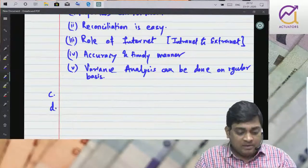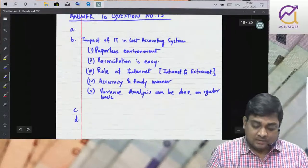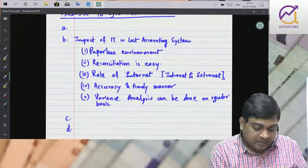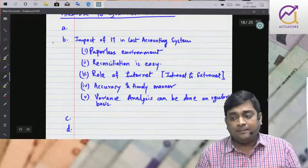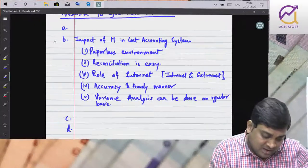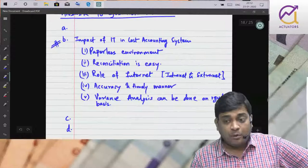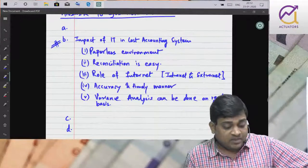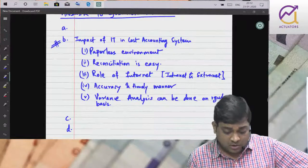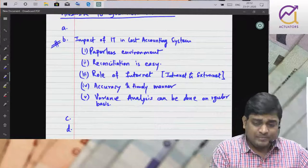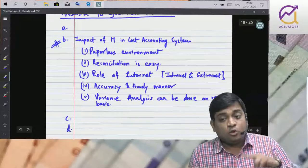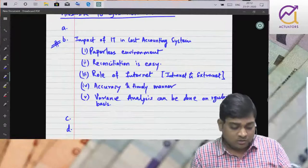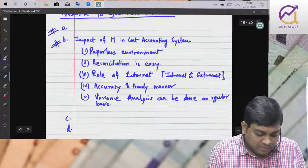So is type se hum logo ka ye paper bhi complete ho gaya. Hum log fir aage aur bhi different types of paper ka analysis baat karenge. Abhi tak maine jo study kiya hai us mein se ye wala question nahi poocha hai. Very important. This term, specially May 2020, this question is very important: impact of IT in cost accounting system. Whereas baaki ye cost and management accounting, pichle 2 RTP se ye questions repeatedly poocha ja raha hai. This question again becomes important.